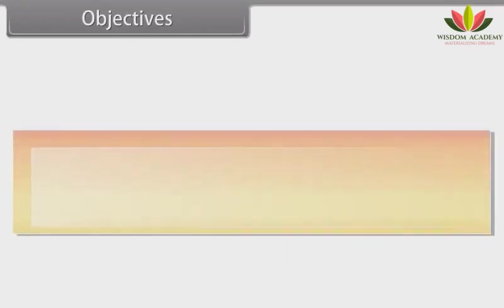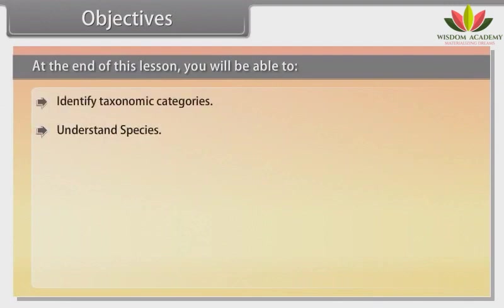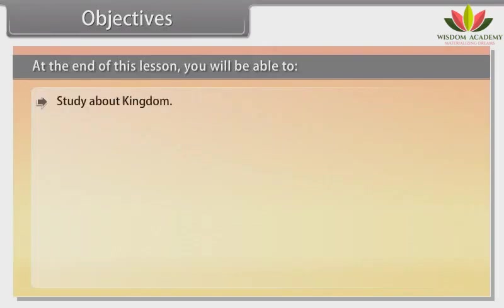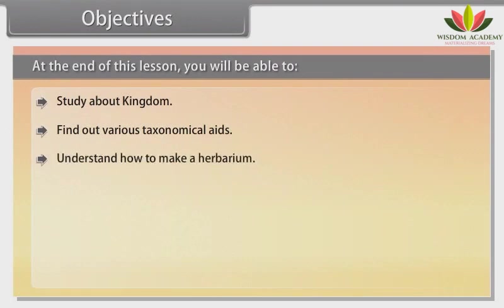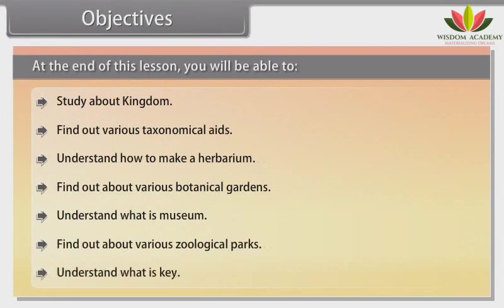Objectives: At the end of this lesson you will be able to identify taxonomy categories, understand species, understand genus, find the types of family, understand types of order, understand class, understand phylum, study about kingdom, find out various taxonomical aids, understand how to make a herbarium, find out about various botanical gardens, understand what a museum is, find out about various zoological parks, and understand what a key is.